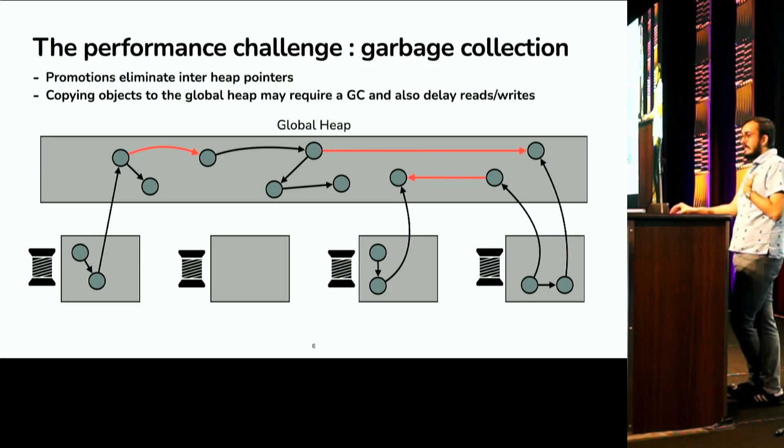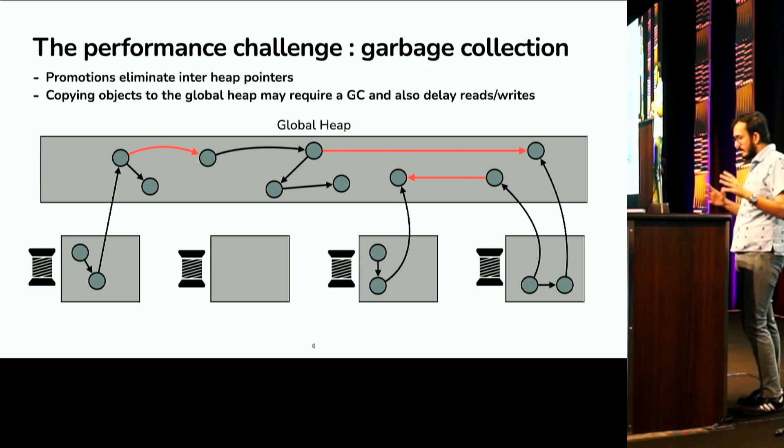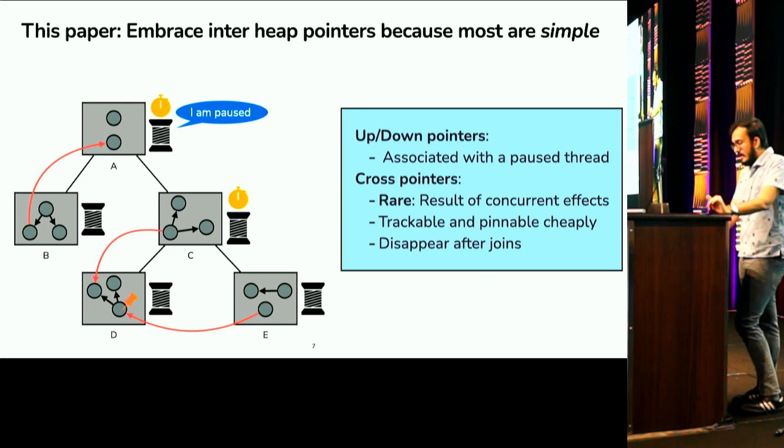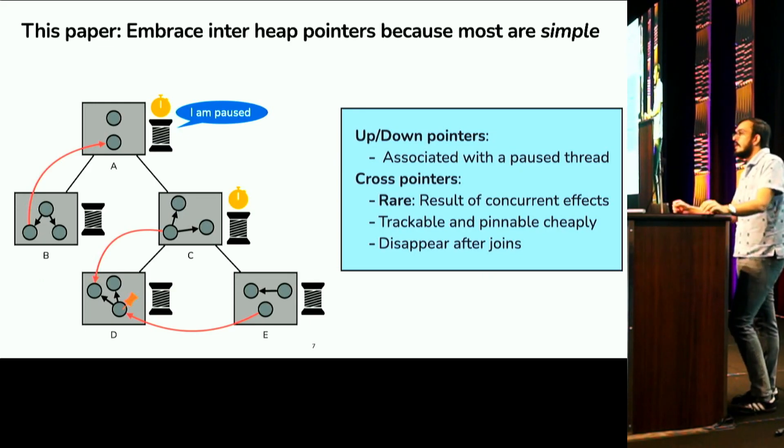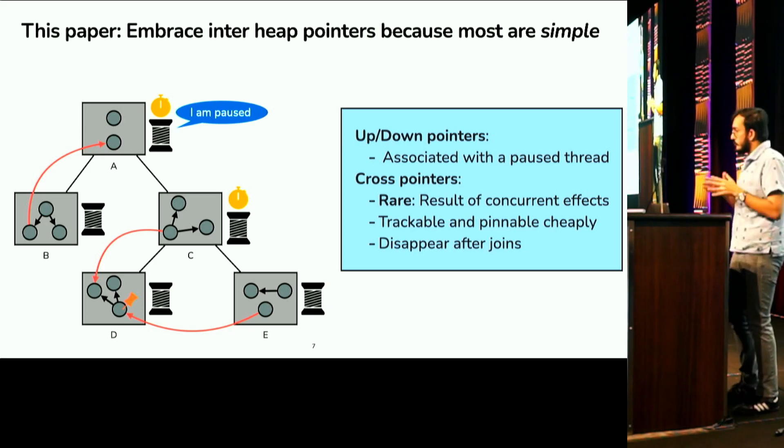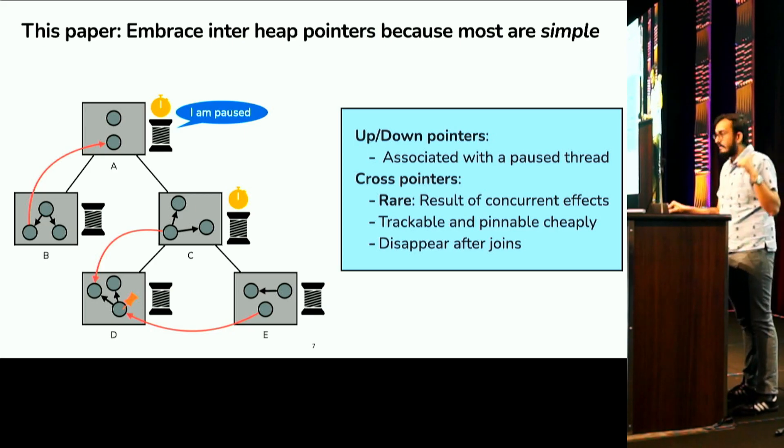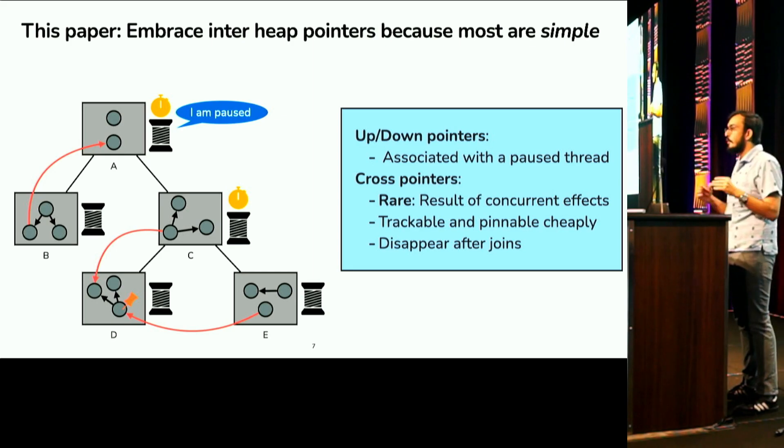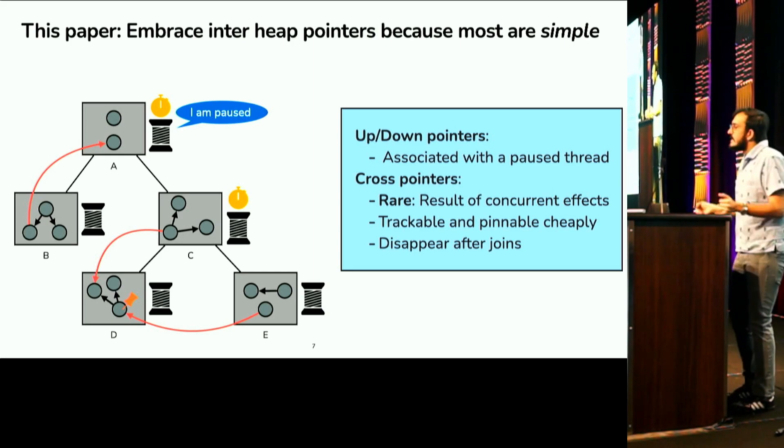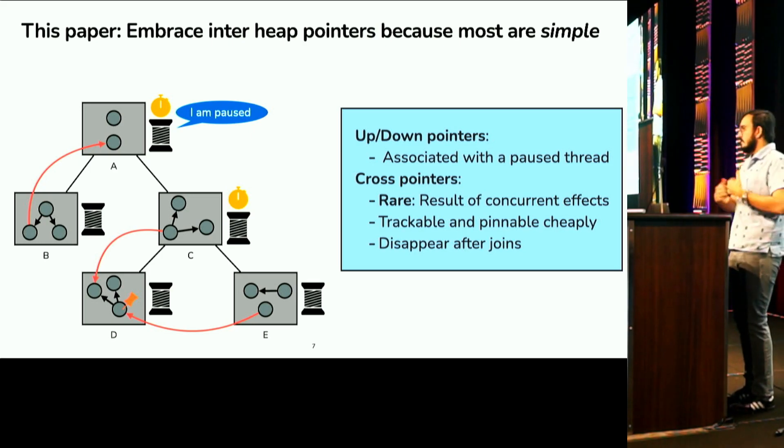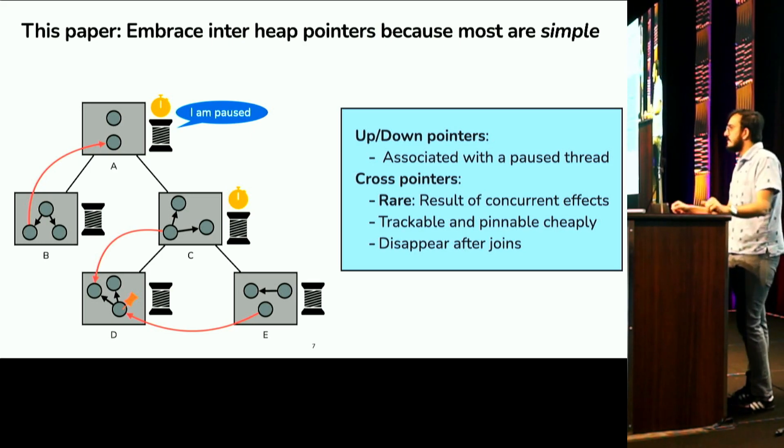So, what we do in our design is we arrange these heaps in a hierarchical fashion. So, in Maple, which is the language that we are working on, we are focused on fork join programs. And what we do for fork join programs is that we arrange these heaps according to the spawn tree of the program. The idea is that the internal nodes of this tree are suspended and the leaves are executing in parallel.